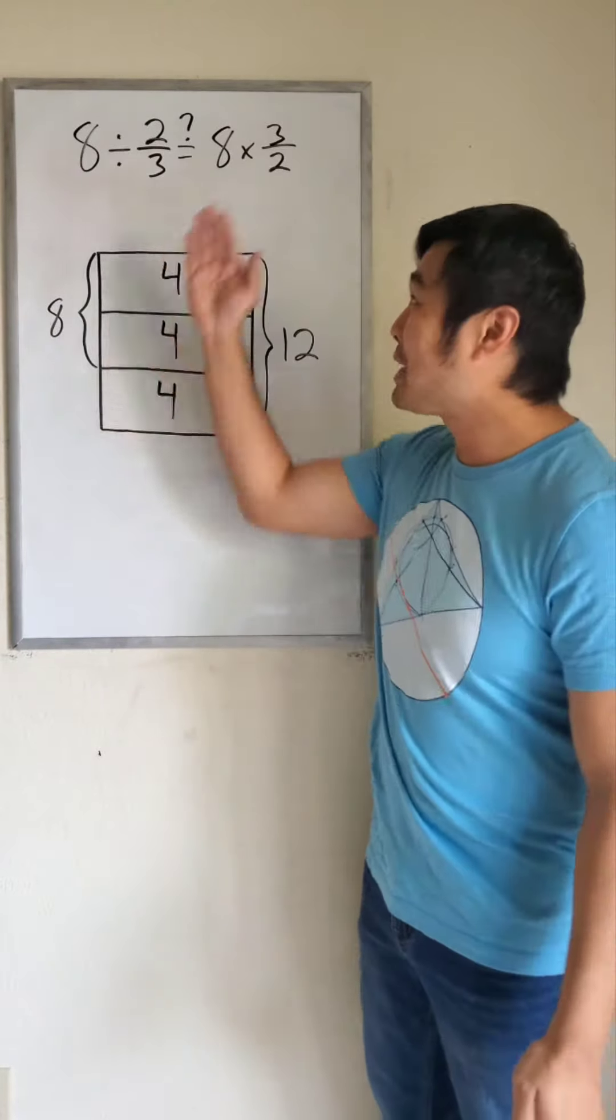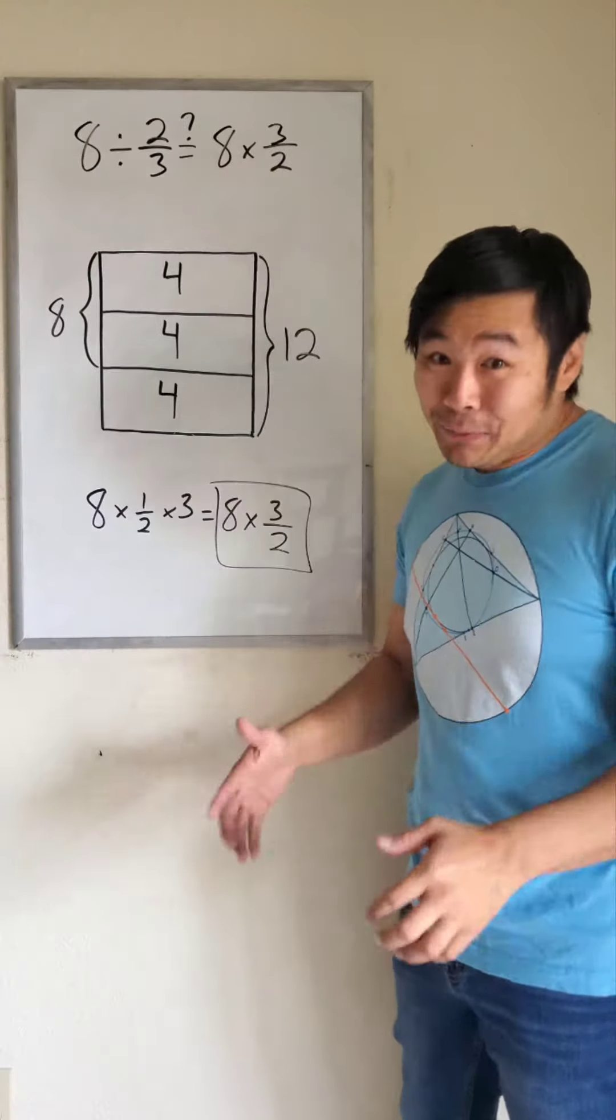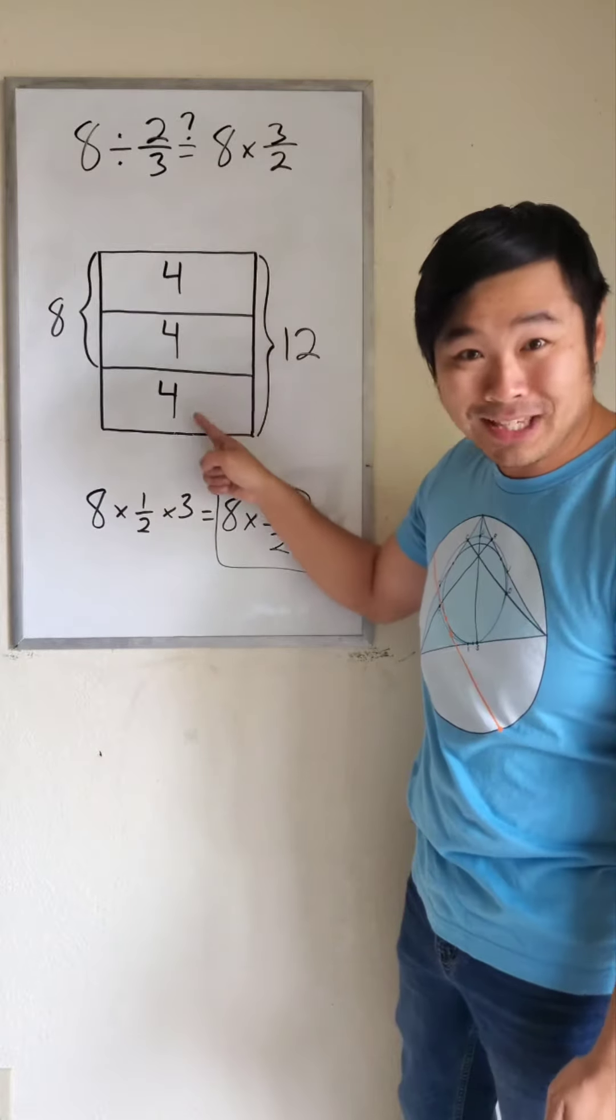So how does this visual show that 8 divided by 2 thirds equals 8 times 3 halves? Well first, we cut 8 in half to figure out what one box is worth. And there are three equal sized boxes,